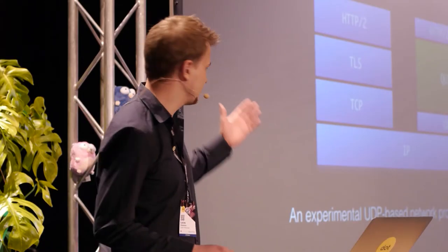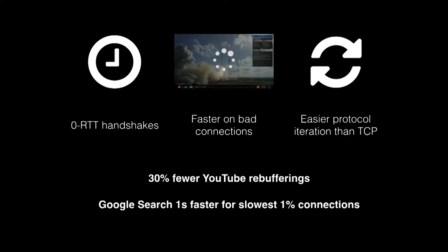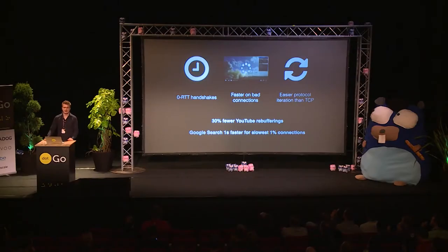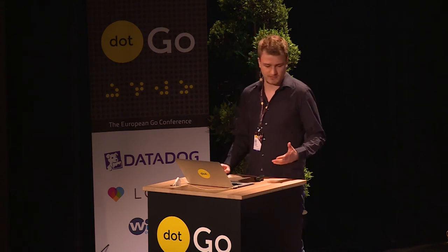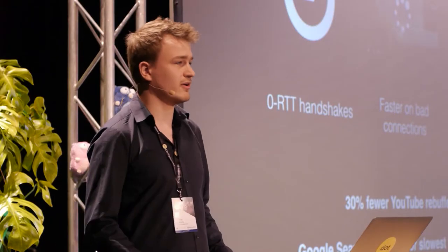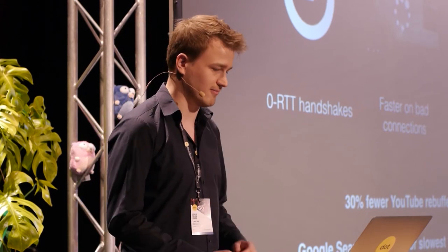QUIC has a couple of interesting features compared to this traditional stack — and these are just three I picked, but there are quite a few more you can find on Wikipedia. QUIC offers zero roundtrip connection handshakes, so the first packet you send to the remote server is already encrypted and can already contain your HTTP request. This compares quite well to TCP plus TLS's usual four or five roundtrips, especially on bad cellular connections. QUIC also has some advantages on bad connections, like how to deal with packet loss and congestion in the network.